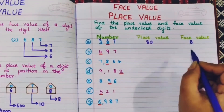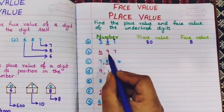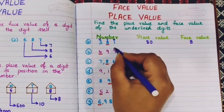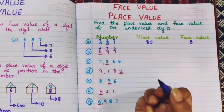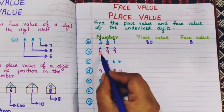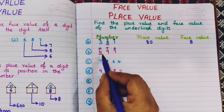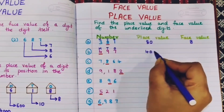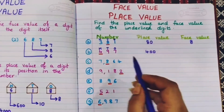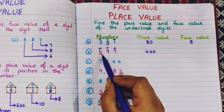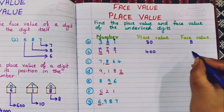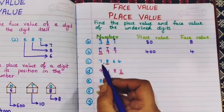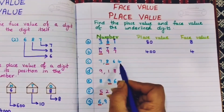Next, 497. Positions: ones, tens, hundreds. 4 is in the hundreds place, so the place value is 400. The face value of 4 is 4 itself.